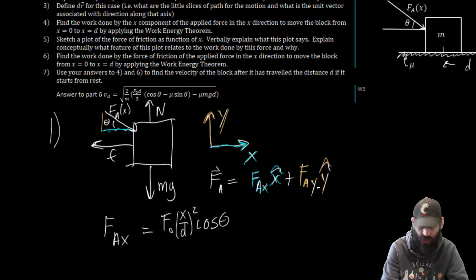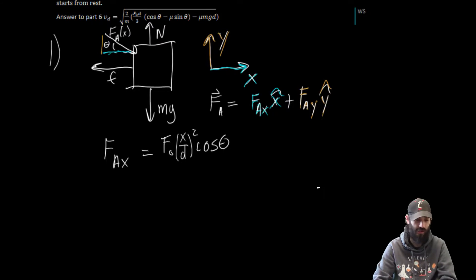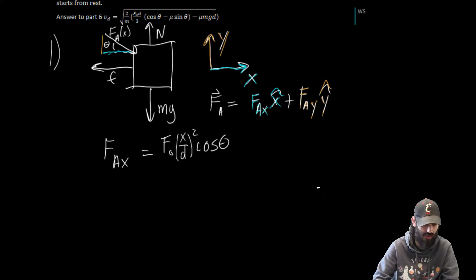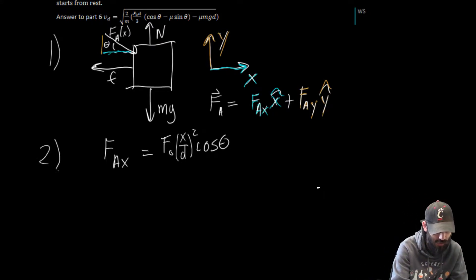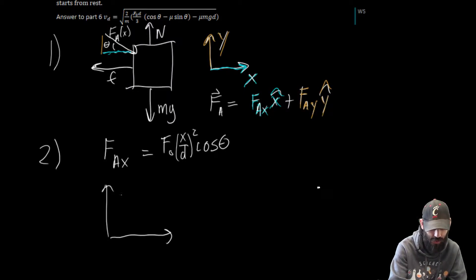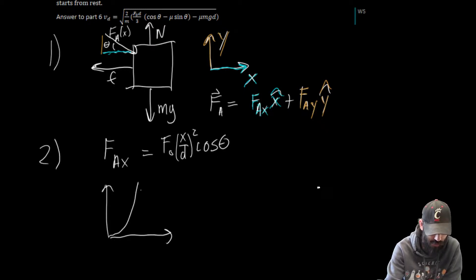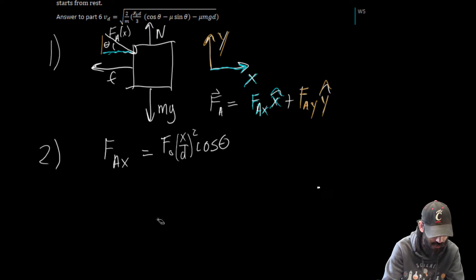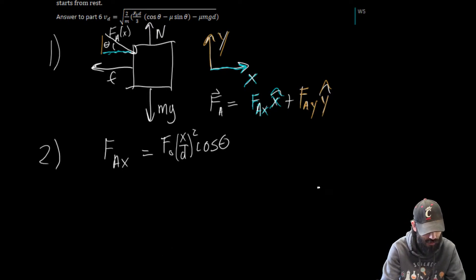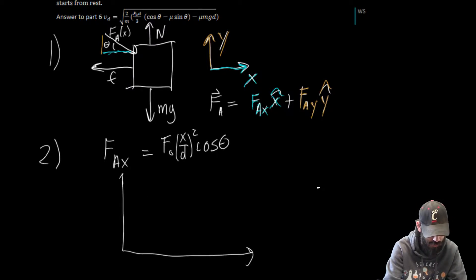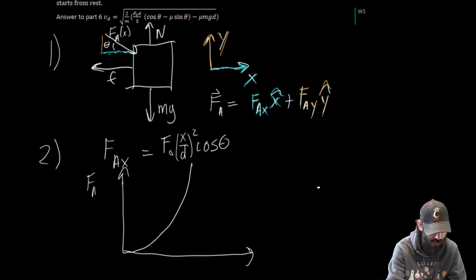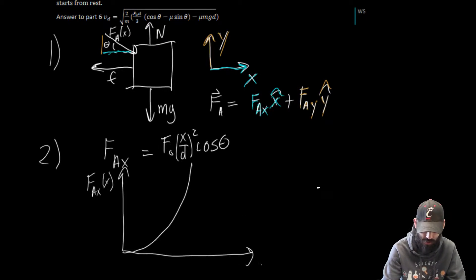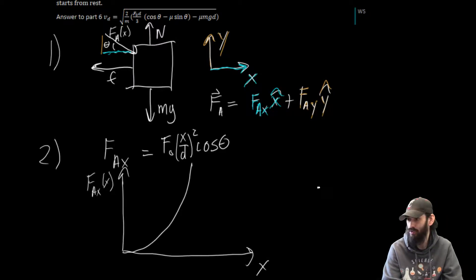Now we'd like to plot this. I don't give explicit values, but we can plot the tendency of this function — it's just a quadratic with intercept at the origin. So here's our plot of F_A_X as a function of X, with the displacement X on the horizontal axis.